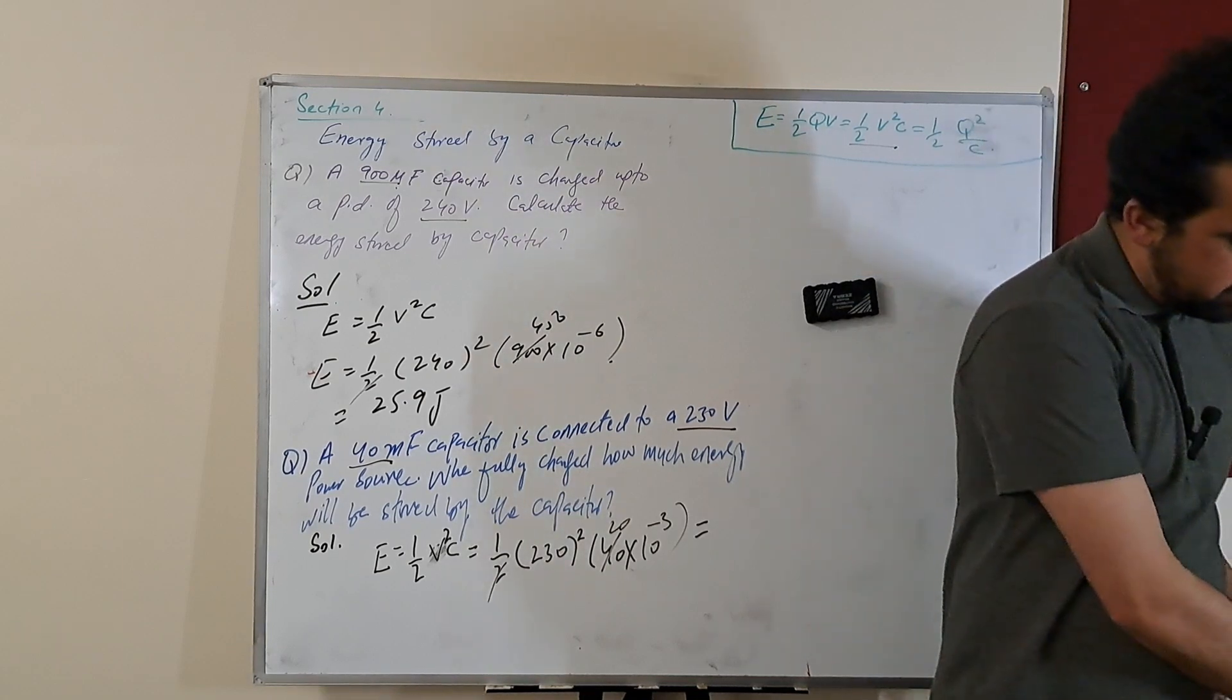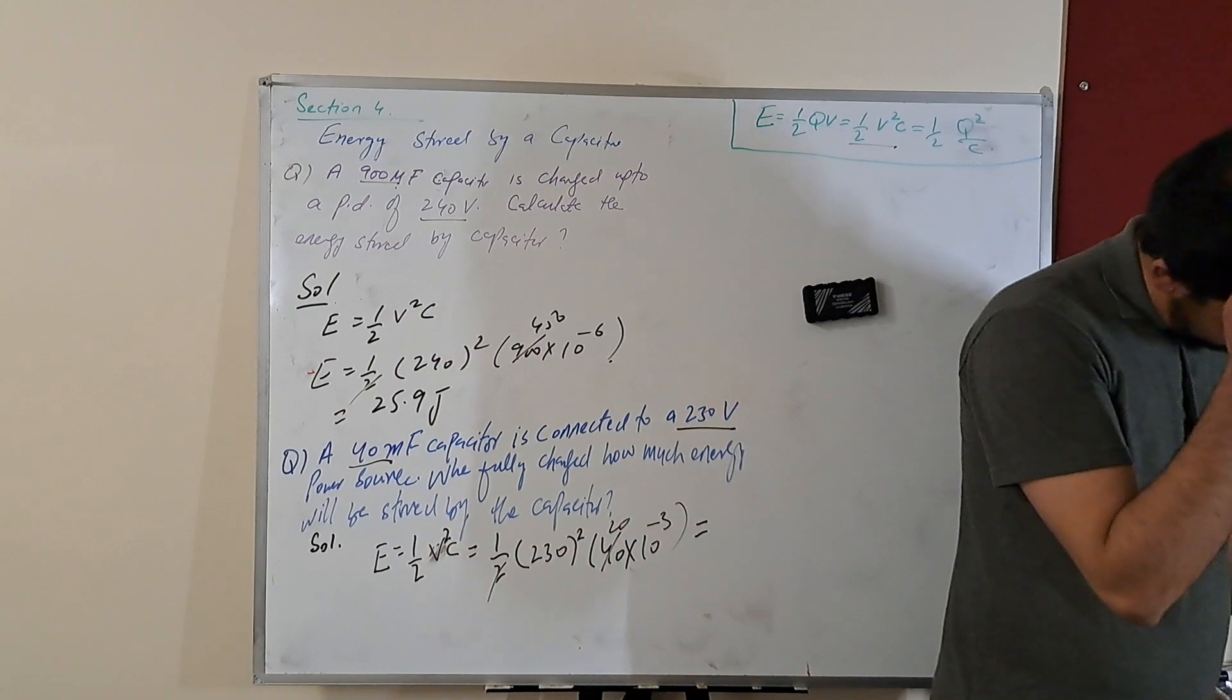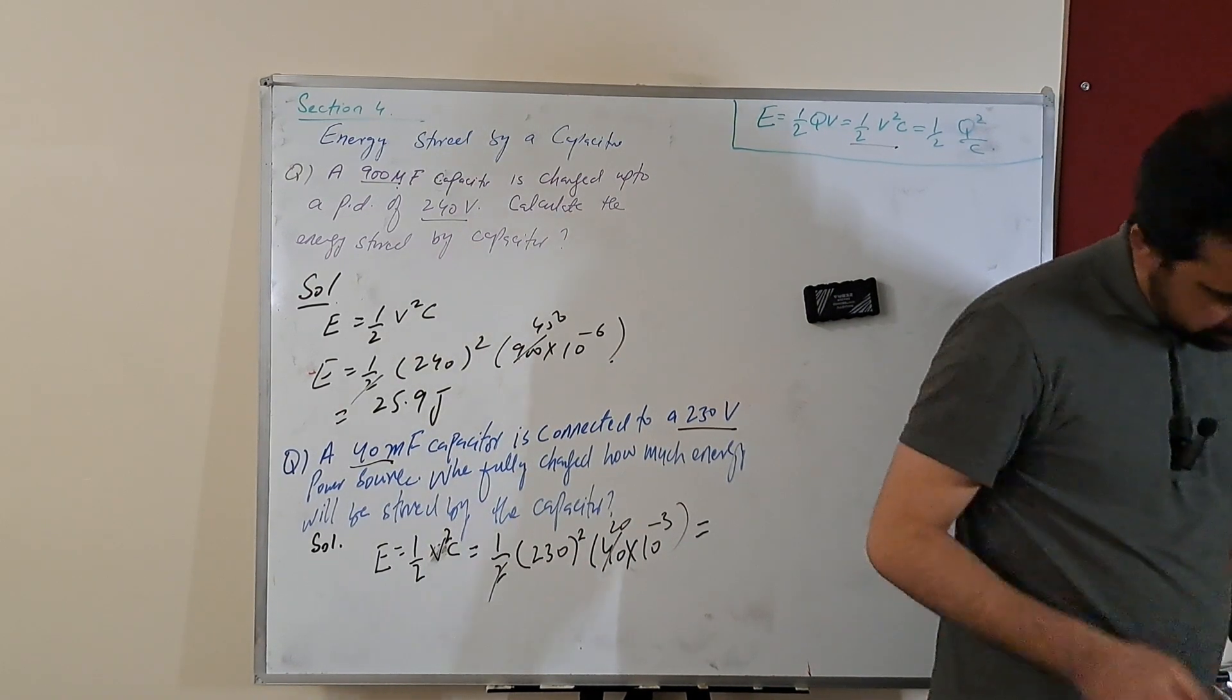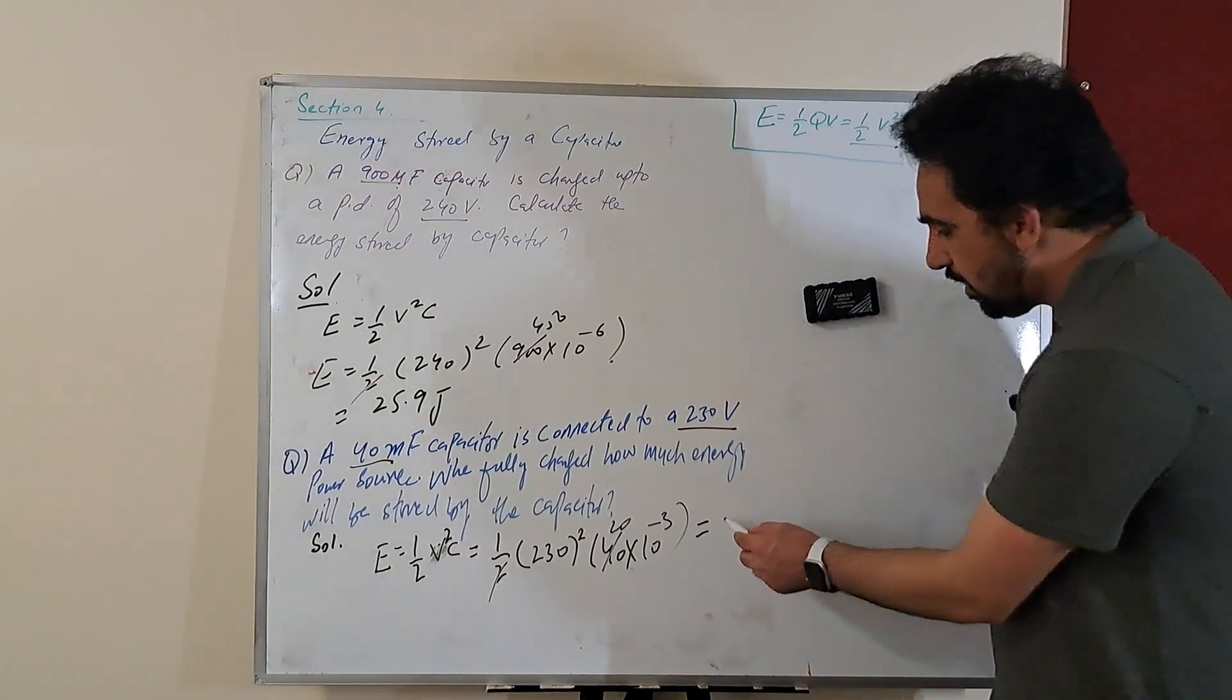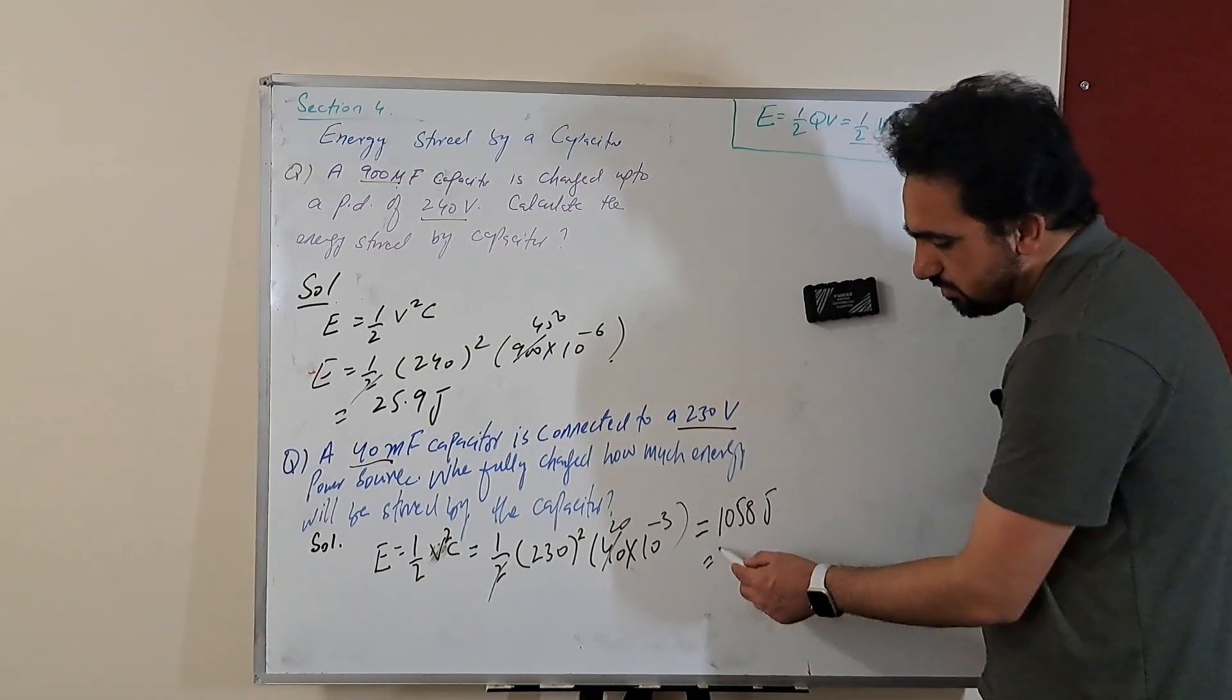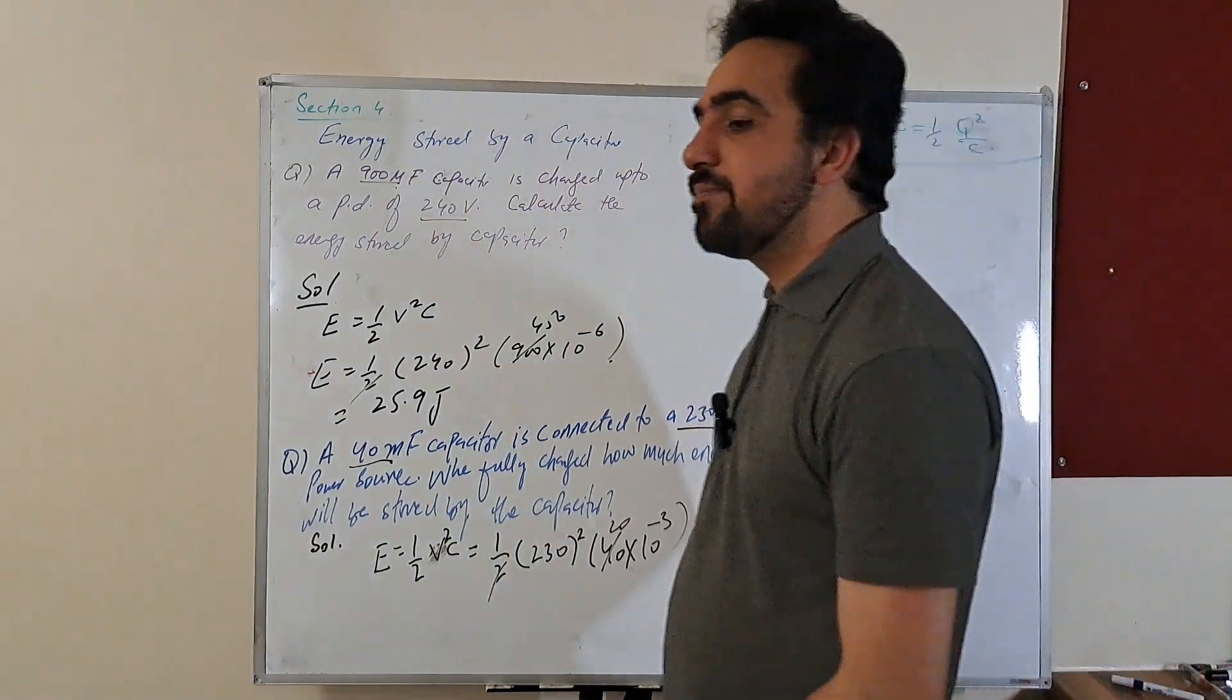Just tell me the last answer. 1,058 joules. 1,058 joules are approximately 1,060 joules of energy.